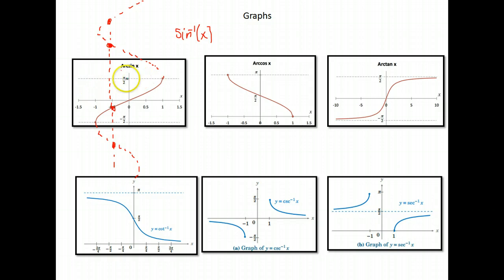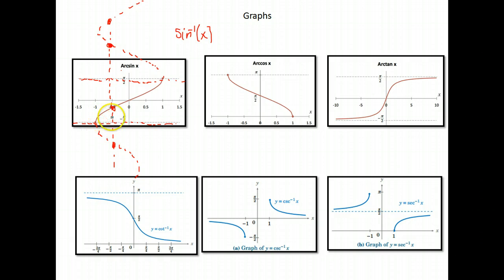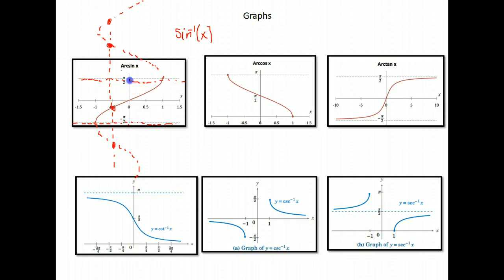What they had to do for the inverse function is cut it off so that it would be a function, so that nothing was repeated. We had as much of the function as we could, but cutting it off so nothing repeats. This is our arc sine. The important thing is when we're evaluating the inverse sine of an angle, our answer is always going to be between negative π/2 and π/2.